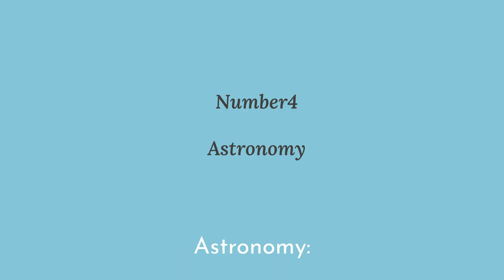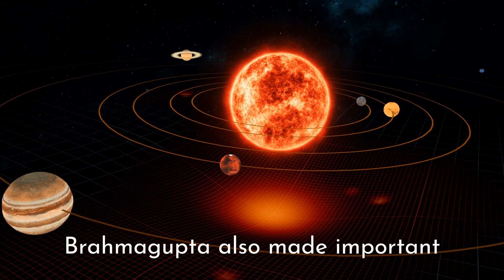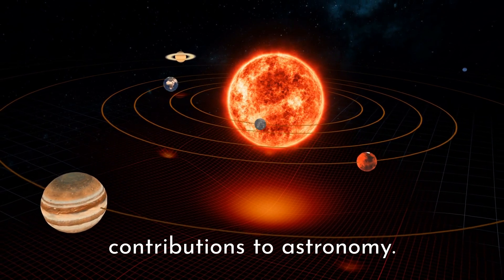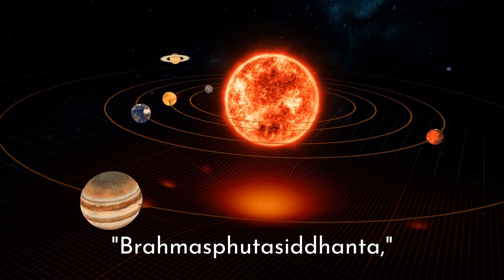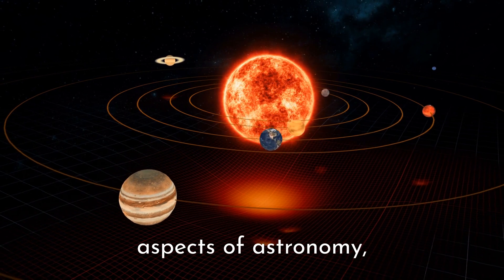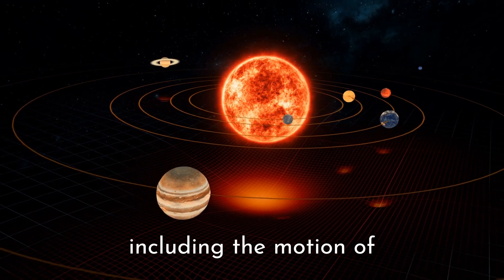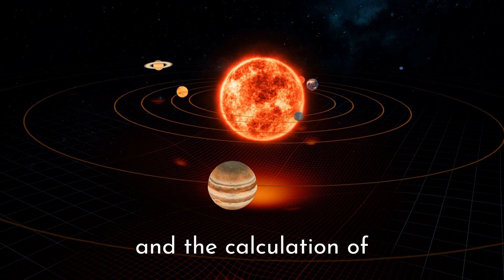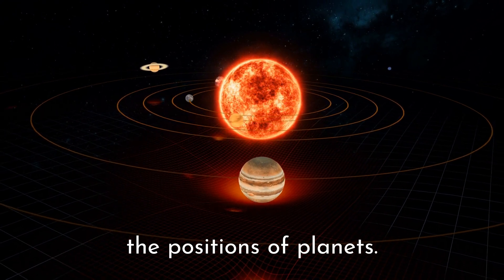Number 4. Astronomy. Brahmagupta also made important contributions to astronomy. He wrote the Brahmasphutasiddhanta, a book that discussed various aspects of astronomy, including the motion of celestial bodies, eclipses, and the calculation of the positions of planets.